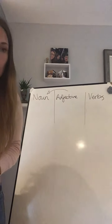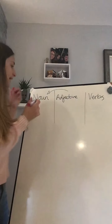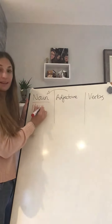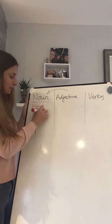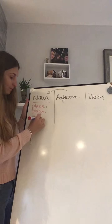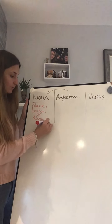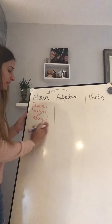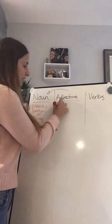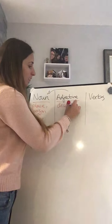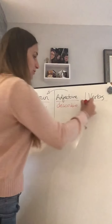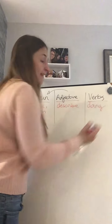So let's see what these words do. Nouns can be a place, a person, or a thing, an object. Adjectives are the ones that describe the noun. And verbs are the doing words.